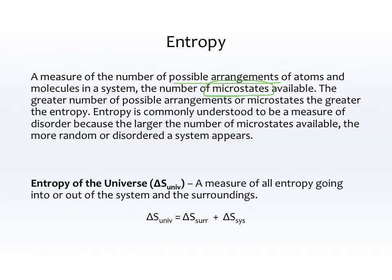Entropy is commonly understood to be a measure of disorder because the larger the number of microstates available, the more random or disordered a system appears. For example, if you had two playing cards, say an ace and a king, there's only a couple of different ways you can organize those two cards, so they always appear relatively organized. But with an entire deck, there are so many ways to arrange them that it appears more random.